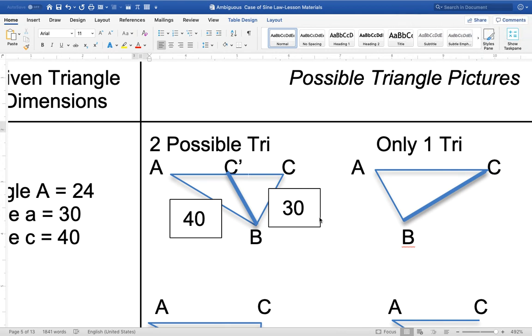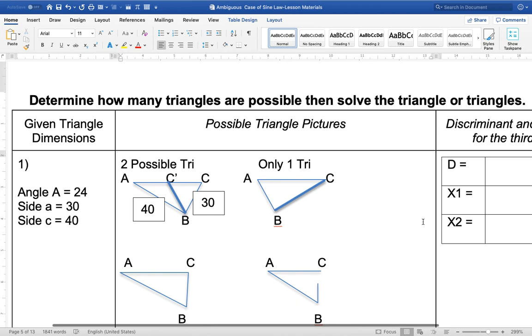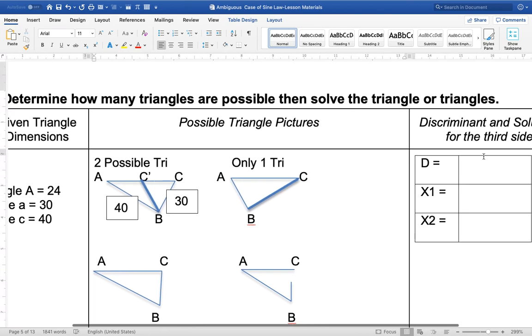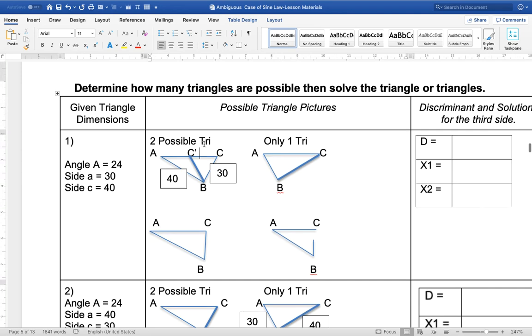What I'm going to do now is take this video. Hopefully you can do all your calculations. You can put in the discriminant there, X1 and X2, so that you have a sense of that. So we've got two triangles.